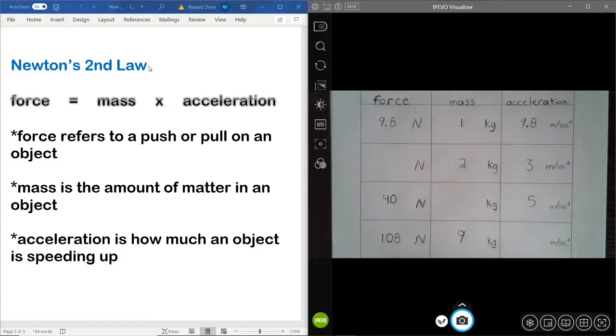Okay, so now we are at Newton's second law. This is the idea that Newton discovered that force is equal to mass times acceleration. So, it's like a math problem, but a pretty easy one at that. Where force is the push or pull on an object. Mass is the amount of matter or stuff inside an object. And acceleration is how much an object is speeding up. Not its speed, but how much it's speeding up.